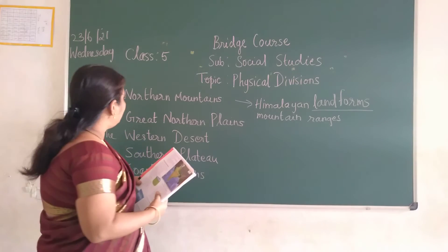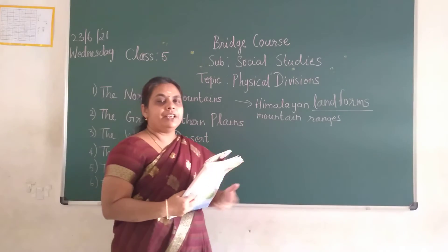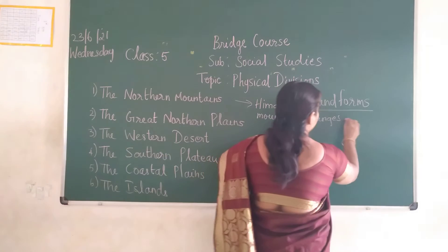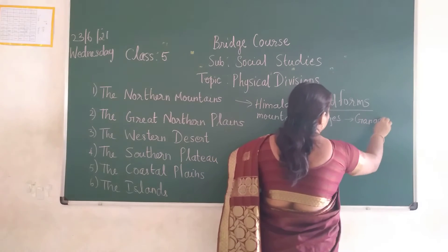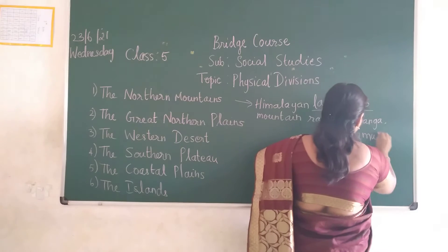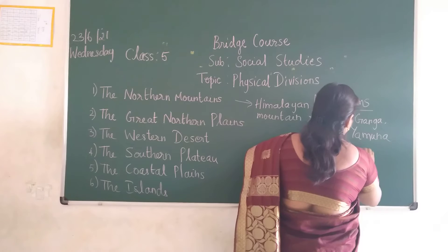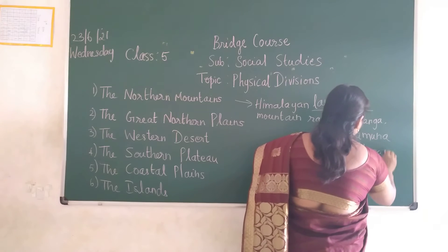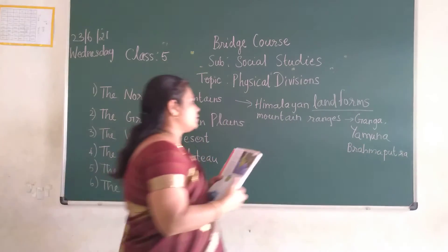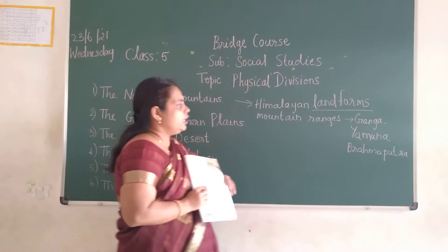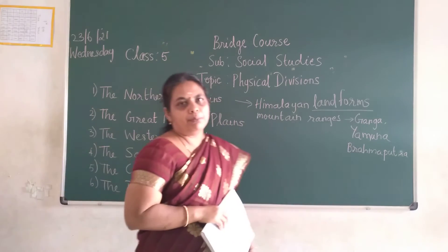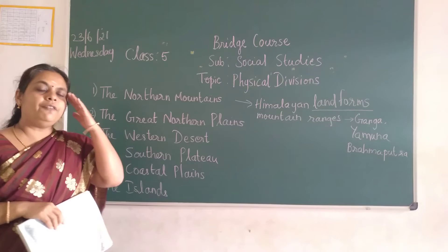The Himalayan mountain ranges give rise to so many rivers. The major rivers originating from these mountain ranges are the Ganga, Yamuna, and Brahmaputra.